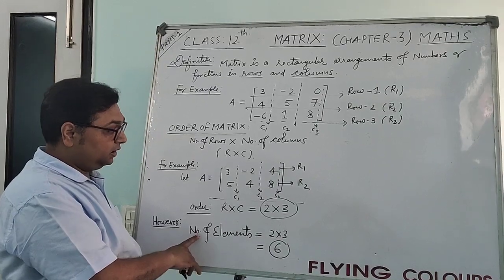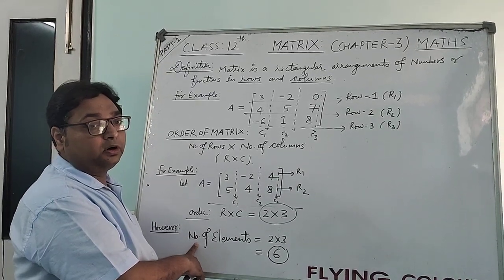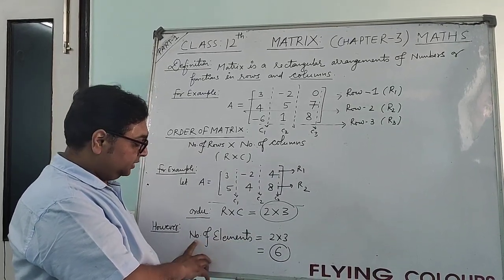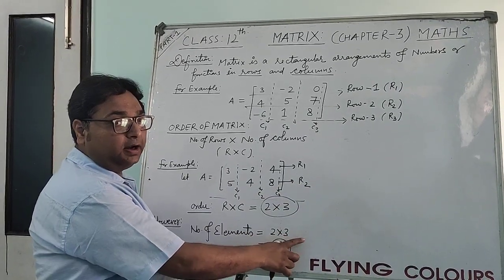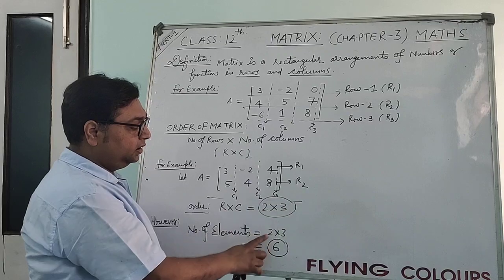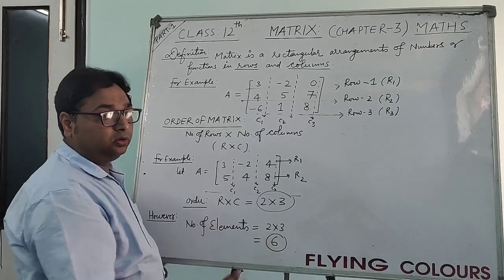However, if we are talking about the total number of elements in any matrix, so total number of elements will be number of rows into number of columns. So here 2 into 3 that will be equal to 6.